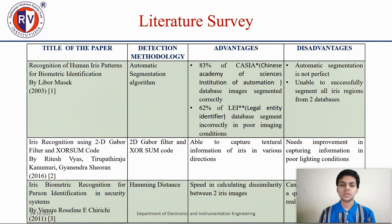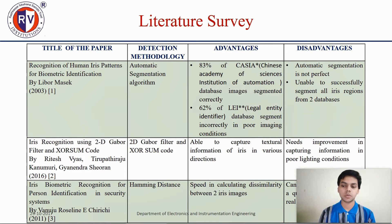Literature survey — these are different papers taken from different authors. We have recognition of human iris patterns for biometric identification by Libor Mason. The advantage of this paper is that 83% of CASA — the Chinese Academy of Sciences Institution of Automation — database images have been segmented correctly, meaning iris images matched the database at a rate of 83%. The disadvantage is that automatic segmentation is not perfect and is unable to successfully segment all iris regions from the true databases.